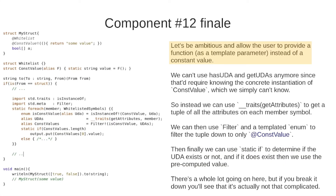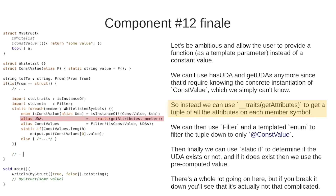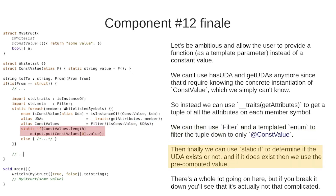Let's do something more advanced: allow the user to provide a function as a template parameter instead of a constant value. We can't use hasUDA and getUDAs anymore since they require a concrete instantiation of ConstValue which we simply cannot know. Instead we can use __traits getAttributes to get a tuple of all the attributes on each member symbol — this gives us both symbols and values. We can then use filter and a templated enum to filter the tuple down to only ConstValue entries. Finally, static if determines if the UDA exists, and if it does we can use the pre-computed value. It's a lot going on but if you break it down it's not that complicated.